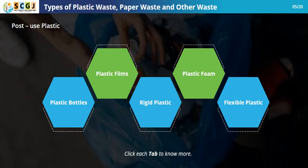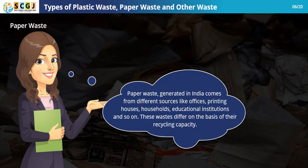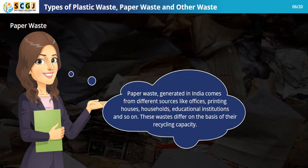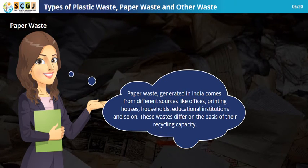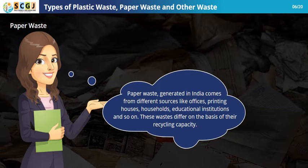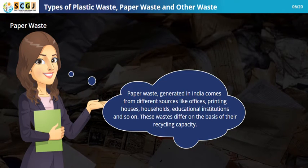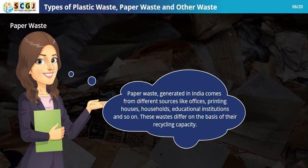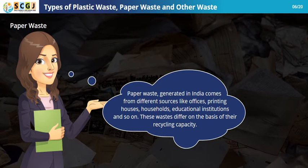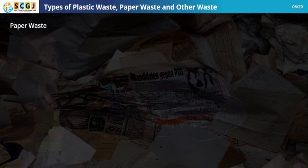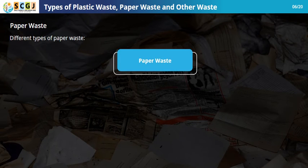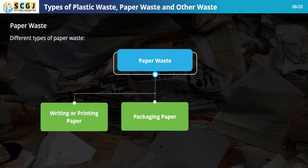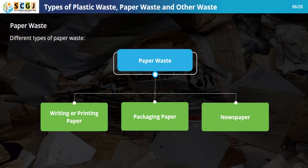Paper waste generated in India comes from different sources such as offices, printing houses, households, and educational institutions. These wastes differ on the basis of their recycling capacity. The different types of paper waste are: writing or printing paper, packaging paper, and newspaper.